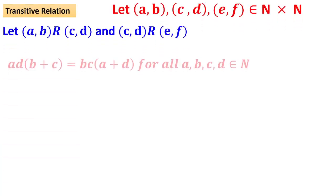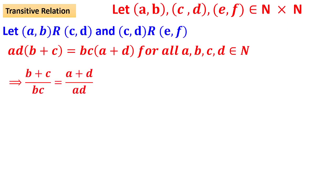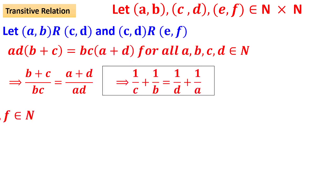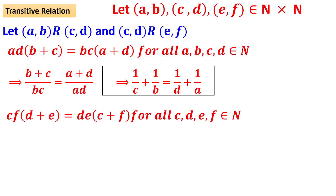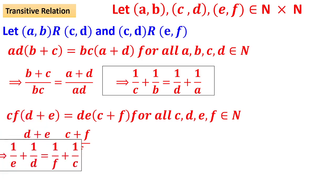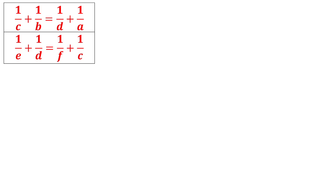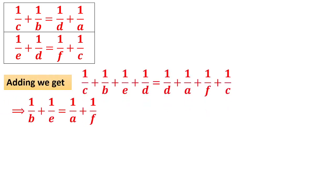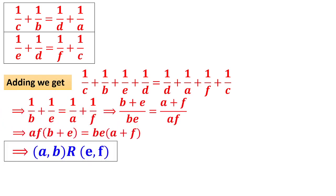For transitivity: assume (a,b)R(c,d). Rearranging gives (b+c)/(bc) = (a+d)/(ad), which simplifies to 1/c + 1/b = 1/d + 1/a. Similarly, when (c,d)R(e,f), we get 1/d + 1/c = 1/f + 1/e. Adding these two results gives 1/b + 1/e = 1/a + 1/f. Taking LCM and cross-multiplying confirms (a,b)R(e,f). Therefore R is transitive, and hence it is an equivalence relation.